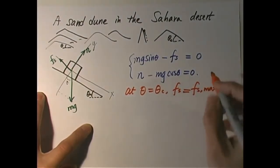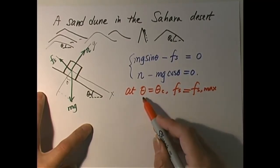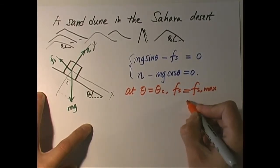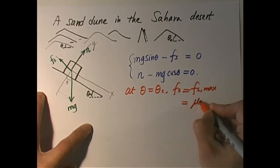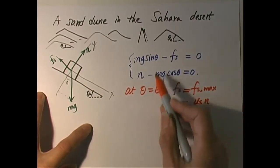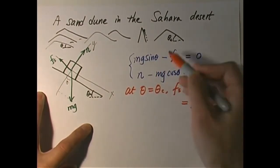At theta equals theta critical, Fs equals its maximum value. Please remember, it does not always equal its maximum value — but it does so when theta reaches theta critical. The nice thing is I know what Fs maximum is: Fs maximum equals mu_s times N. So what you do is plug in theta equals theta_c and Fs equals mu_s times N into this equation.